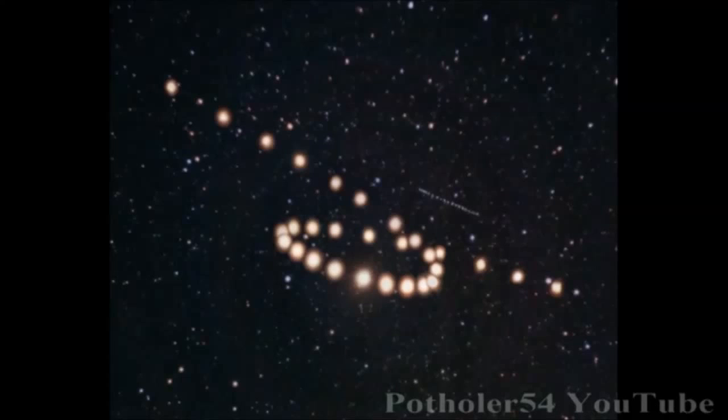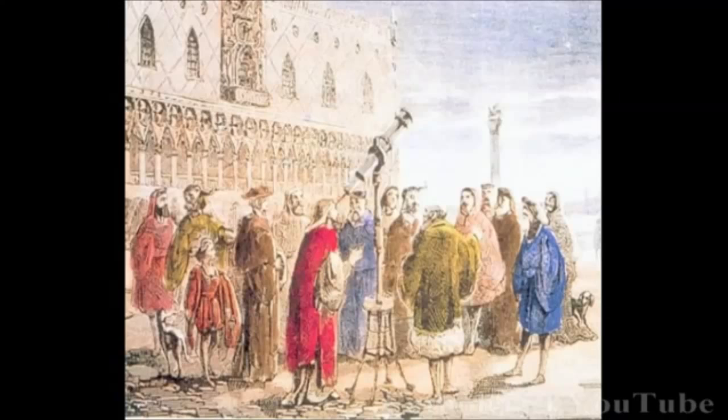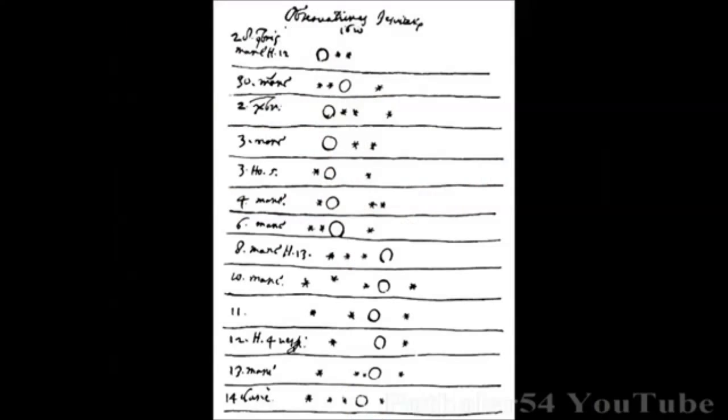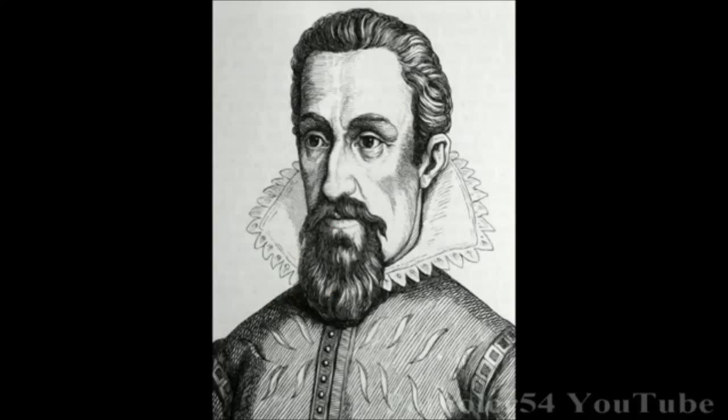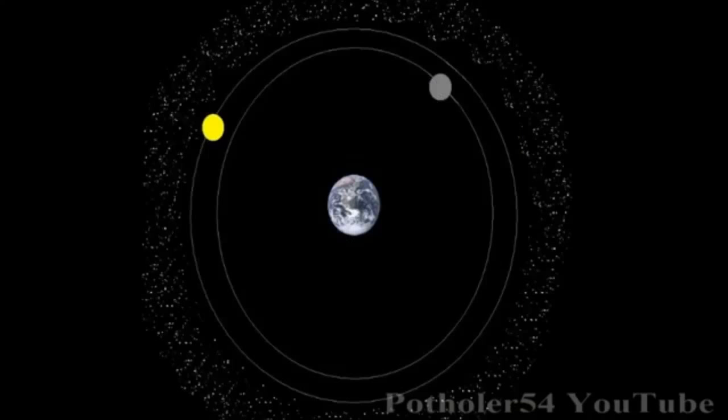When the telescope was invented, these planets turned out to be very different to the fixed stars. But it wasn't until Johannes Kepler calculated the exact orbits of the planets that a model of the solar system at last fit the observations. His law of planetary motion turned this into this.